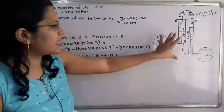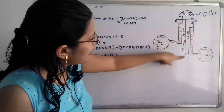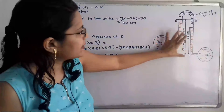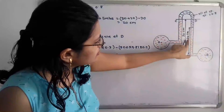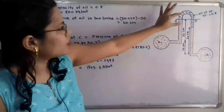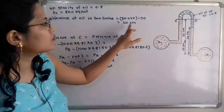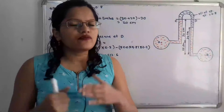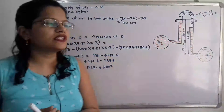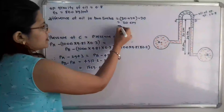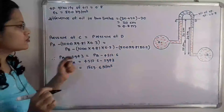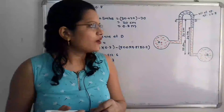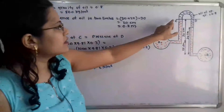To find the height of oil in the two limbs, we use the diagram. The total height is 30 plus 20, which equals 50, and we subtract the height of water in the right-hand side limb, giving a remaining height of 20 cm. We then convert this to standard units: 20 cm equals 0.2 meters.